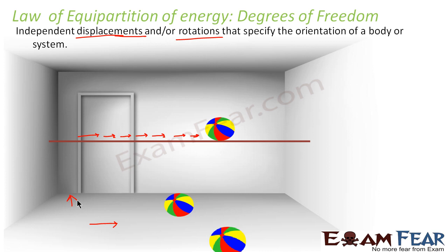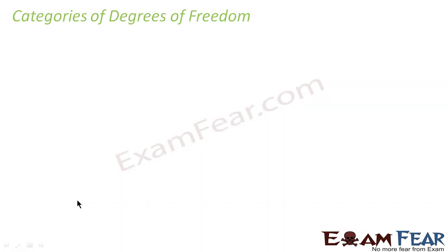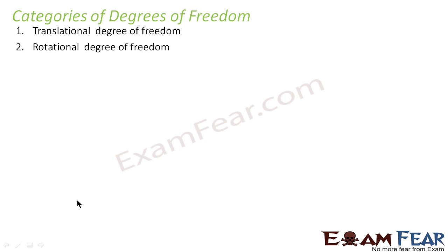So I just talked about movement — the translations. Degrees of freedom tells you in how many ways a particular object can move, rotate, or vibrate. That is basically the independent displacements or rotations that specify the orientation of a body or system. Now there are three different categories of degrees of freedom: translational degree of freedom, rotational degree of freedom, and vibrational degree of freedom. We will talk about each of them as we go ahead.